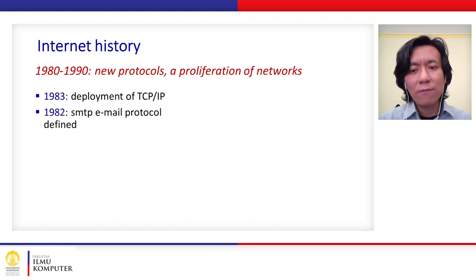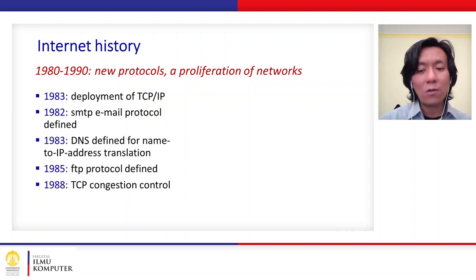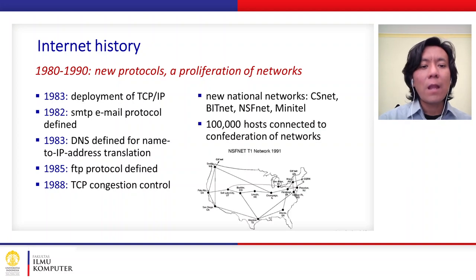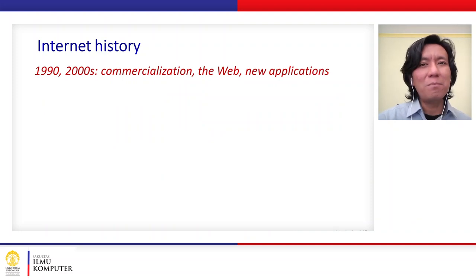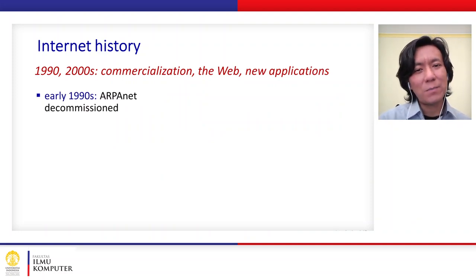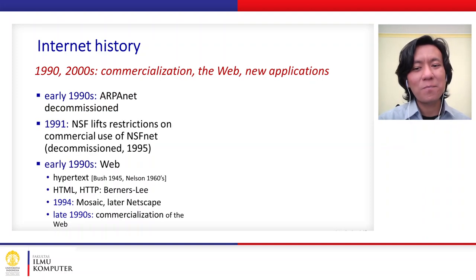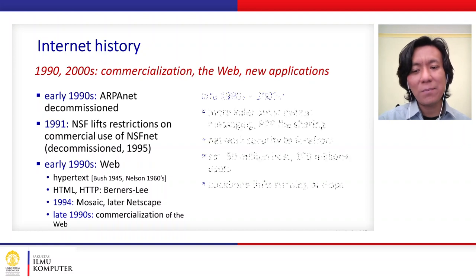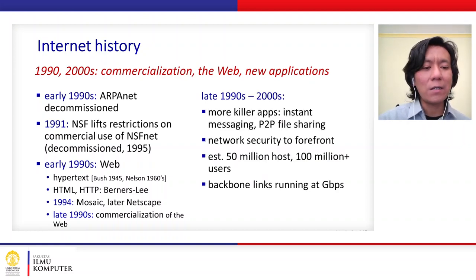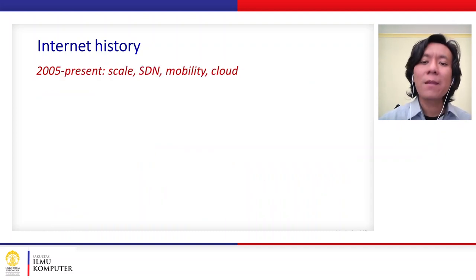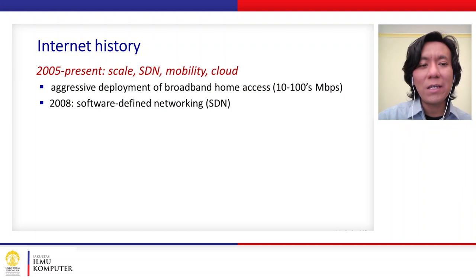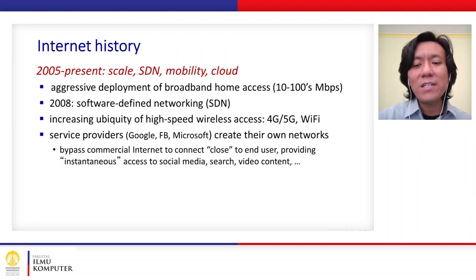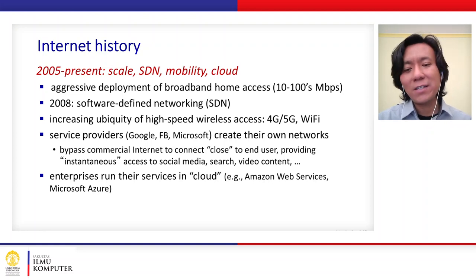TCP/IP, SMTP, DNS, FTP, and other protocols were discovered in the 1980–1990 period, along with new networks such as CSNET, BITNET, and SFNET. Then came the first internet boom of the early 1990s, when the World Wide Web was discovered — hypertext, HTML, HTTP — and many applications were developed. Today's era includes SDN, cloud computing, Wi-Fi, 4G, 5G, and many new and interesting aspects of computer networks.